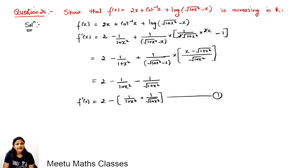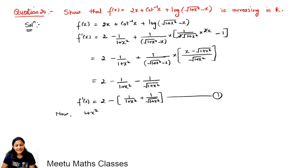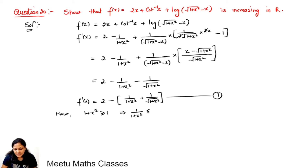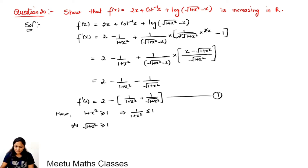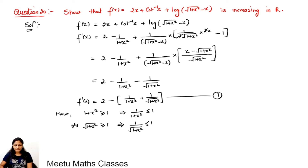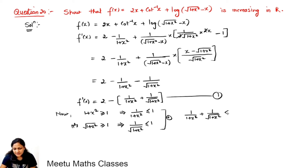Now we have to check whether this derivative is positive or negative on the set of real numbers. We know that x² is a positive term, so 1+x² must be greater than or equal to 1. This implies that 1/(1+x²) must be less than or equal to 1. Similarly, √(1+x²) is greater than or equal to 1, so 1/√(1+x²) must be less than or equal to 1. If we add these two, then 1/(1+x²) + 1/√(1+x²) must be less than or equal to 2.